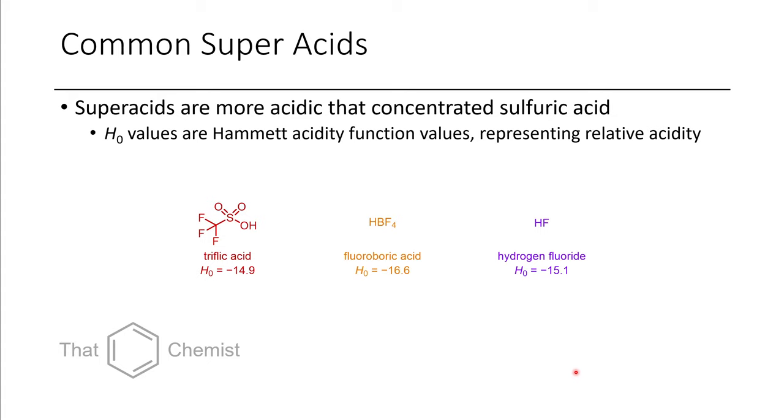Okay, before we get into today's material, I thought it would be worth mentioning some super acids that are commonly used. So sometimes to get reactions to work really well in organic chemistry, we need to use harsher acids than the typical HCl, HBr, phosphoric acid, that kind of thing. And so there's a class of acids called super acids.